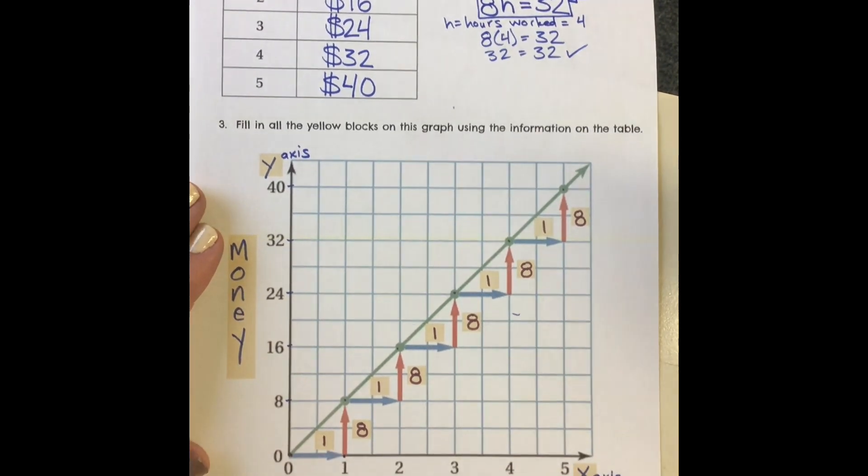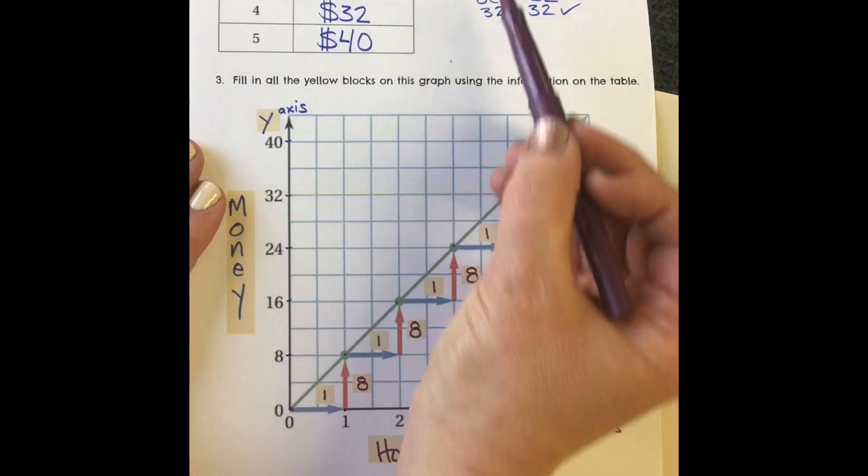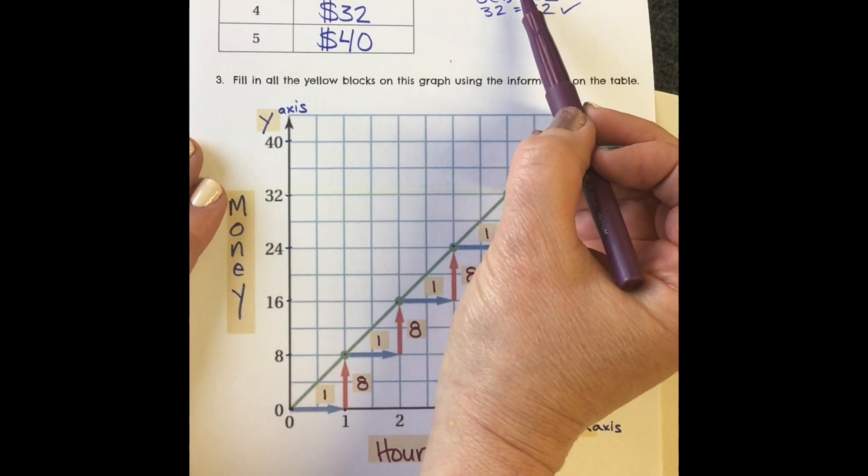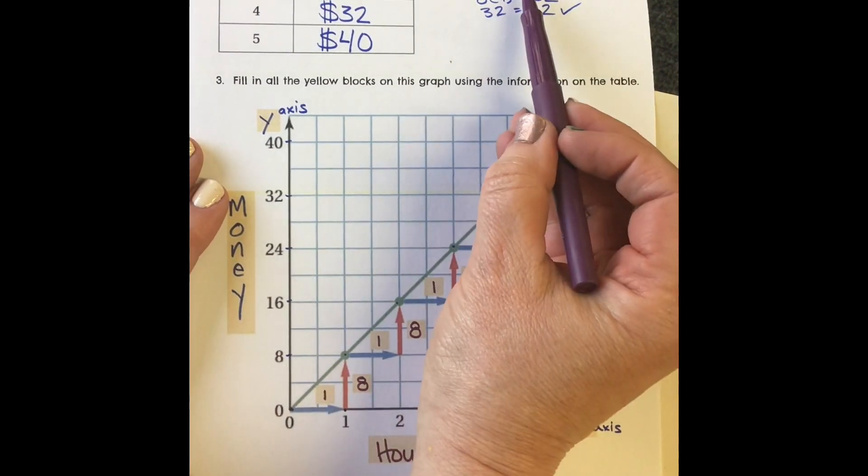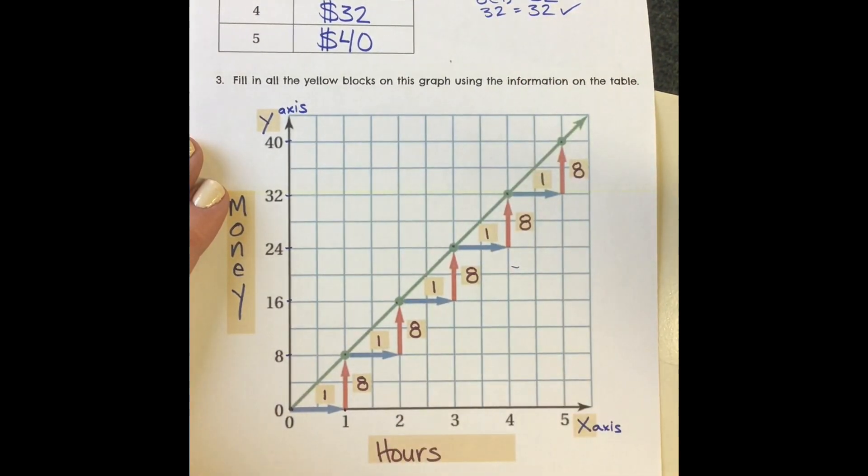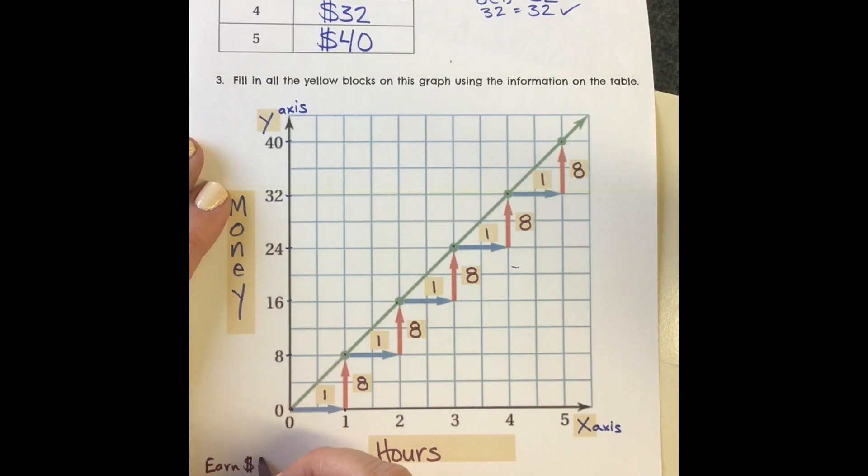Now let's check one thing here. Can I write my original equation? Can I make that a two-variable equation that explains the whole relationship, not just one particular time? Remember we said you earn $8 per one hour.